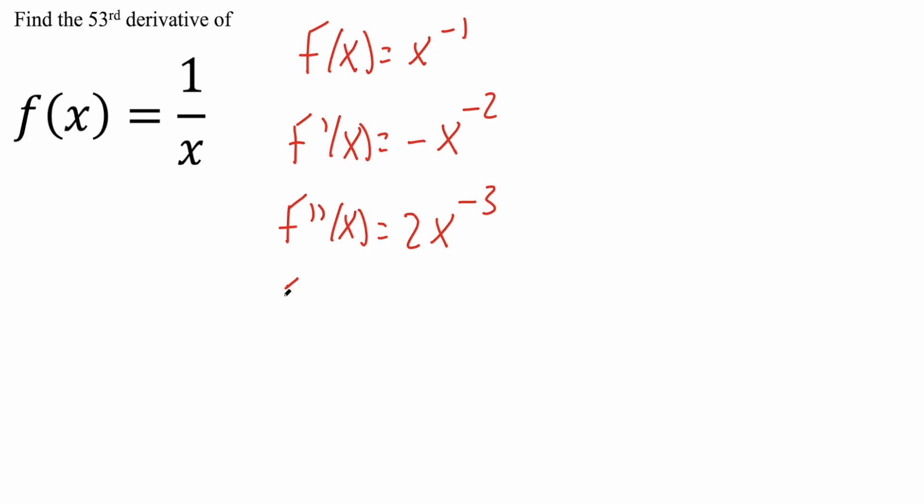We'll continue again. Let's do a couple more just to see if we can spot a pattern. So we have 2 times negative 3, which is negative 6, x raised to negative 4. Let's just do one more. So the fourth derivative, we're going to get negative 6 times negative 4 is positive 24, x raised to negative 5.